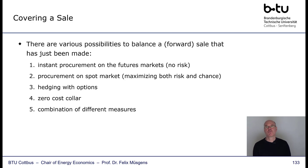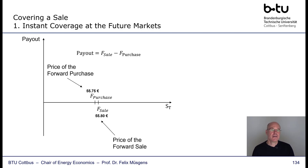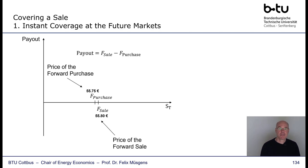Case one — instant coverage at the futures market: you sell forward and immediately buy on the futures market. The forward sale price is, say, 55.80 euros per MWh and the forward purchase price is 55.75 euros per MWh. The payout is simply the difference between the sale and purchase price — fixed and certain.